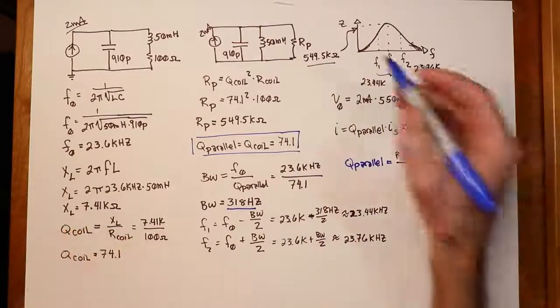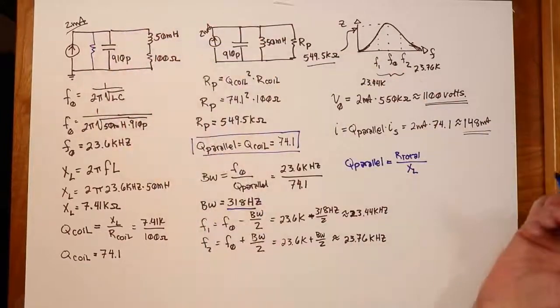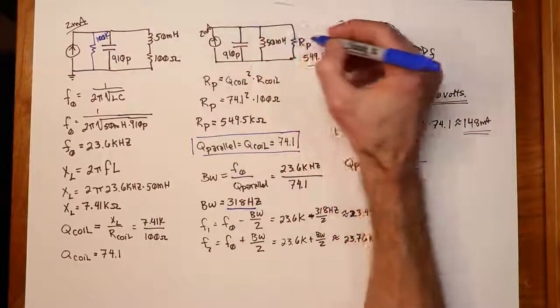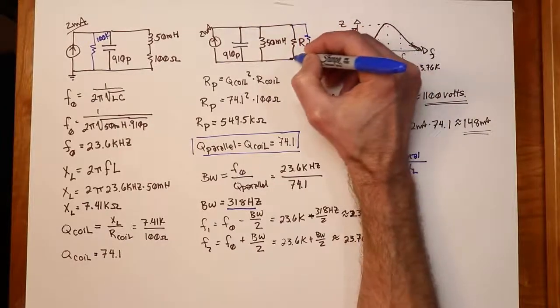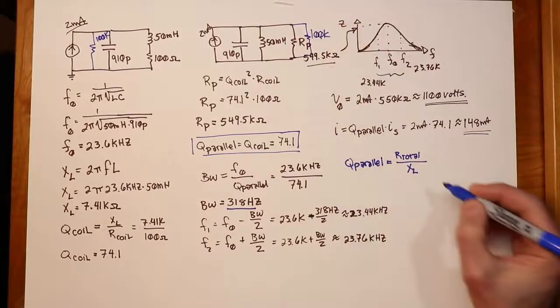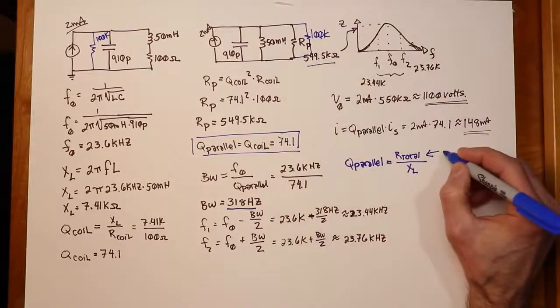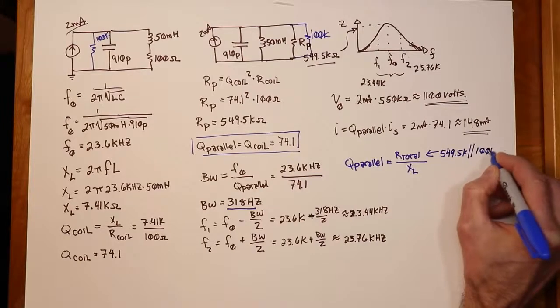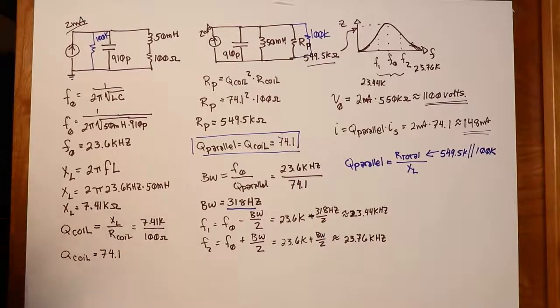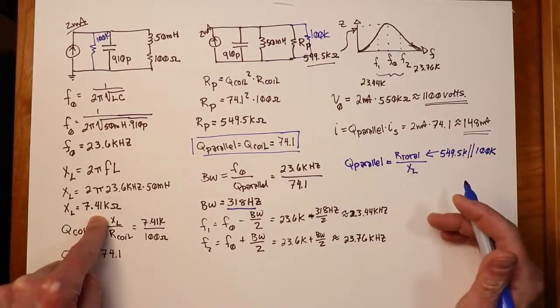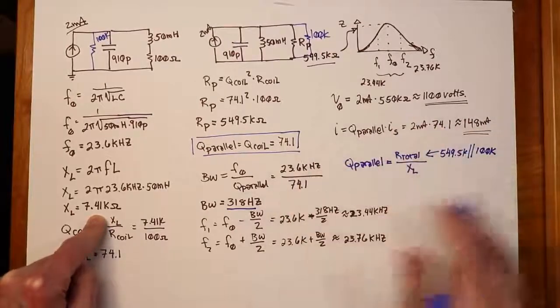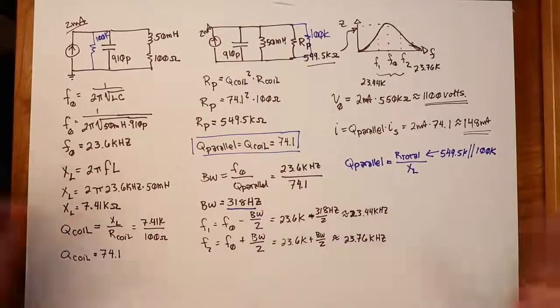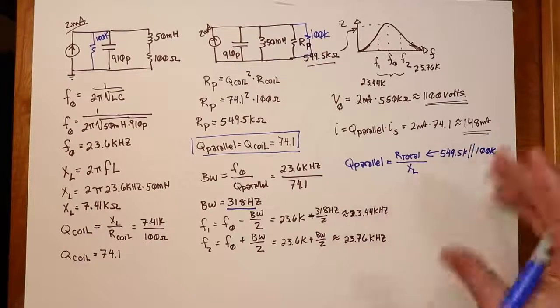But suppose we did. Suppose we had, back here, some extra resistance, like 100k or something. Just pull a number out of the air. What ends up happening? Well, that 100k is effectively in parallel with our RP. So, your R total, this guy right here, would no longer be 549.5k. It would be 549.5k in parallel with the 100k. So that's going to get you 80-ish k ohms. You divide that by the 7.41k, and now your system Q, your Q parallel, will have dropped from 74, down to 12 or 14 or whatever it happens to work out to.